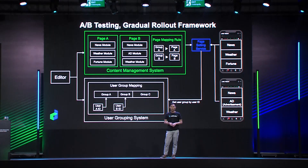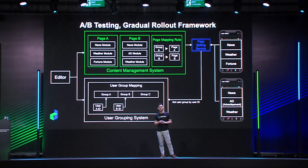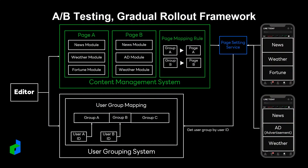As previously mentioned, the editor goes to the content management system to set up page setting and page mapping rules. In this A/B testing case, the editor needs to set up two different pages — page A and page B — where only page B contains an ad module. This may be undesirable to users, but it is necessary for our business. The editor then sets up the page mapping rule — in this case, by user group: group A is mapped to page A, and group B is mapped to page B.